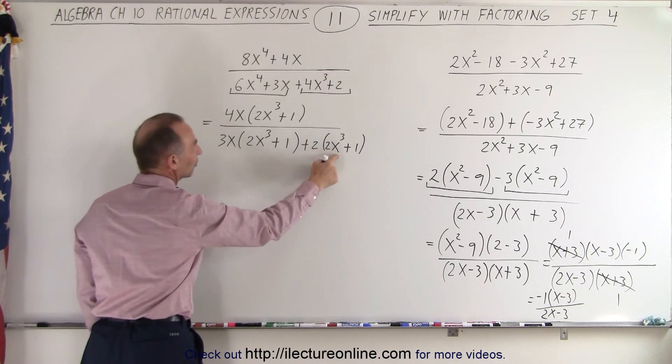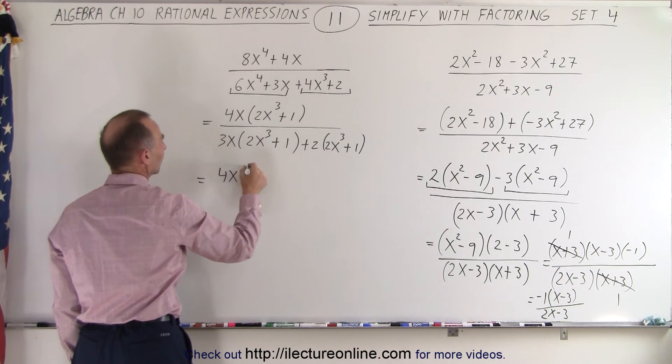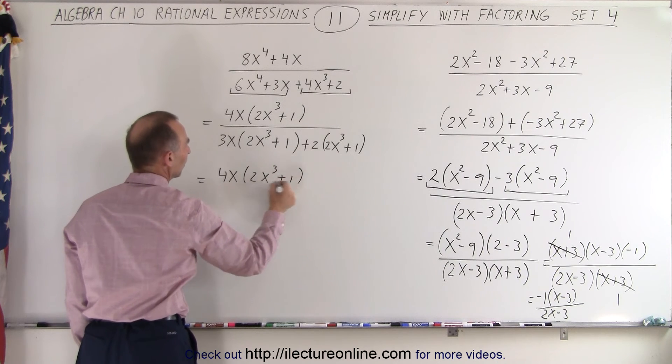And then notice we have similar factors in the denominator, so this can then be written as a 4x times 2x cubed plus 1 in the numerator.